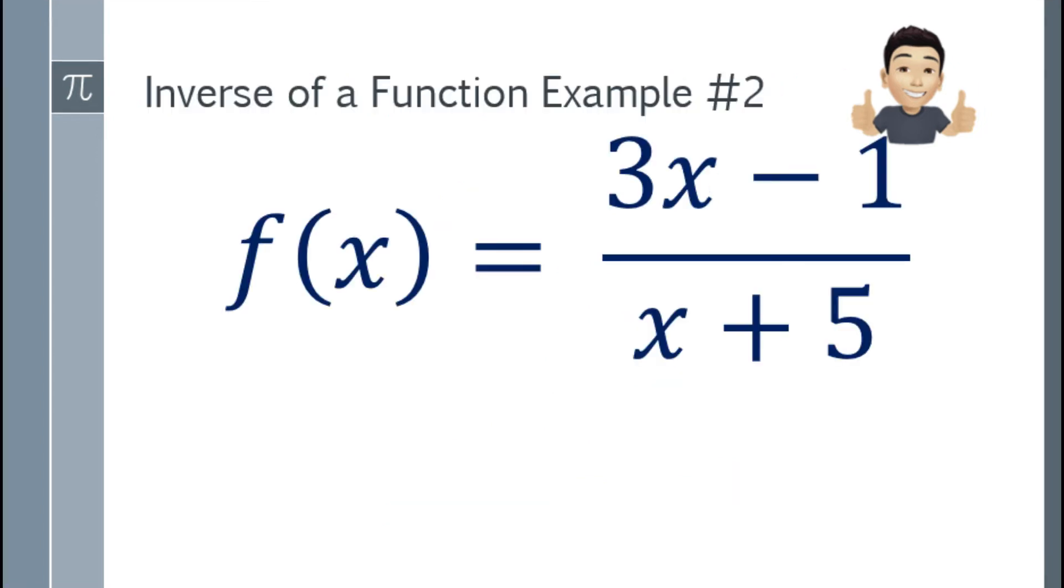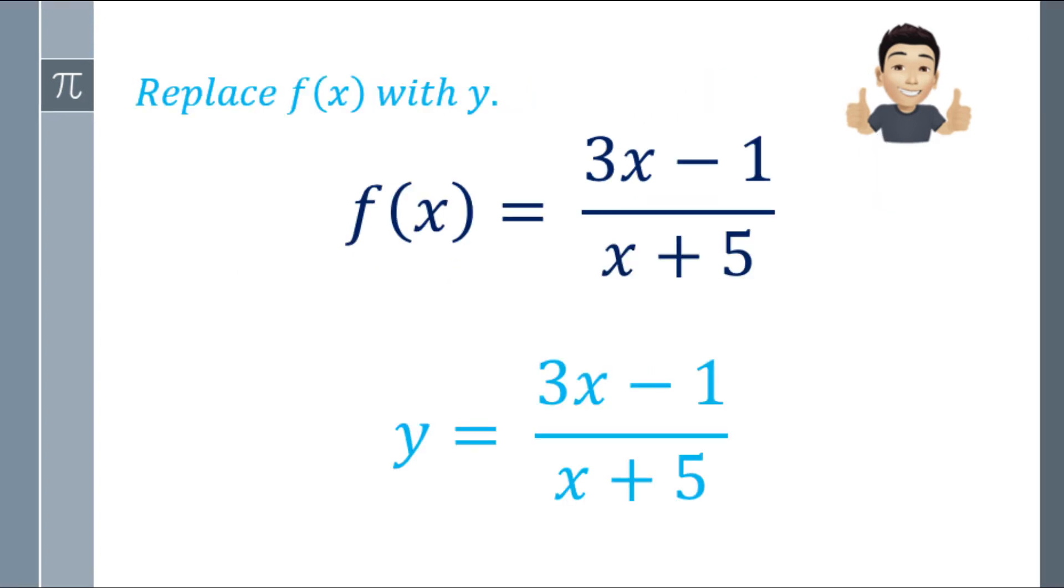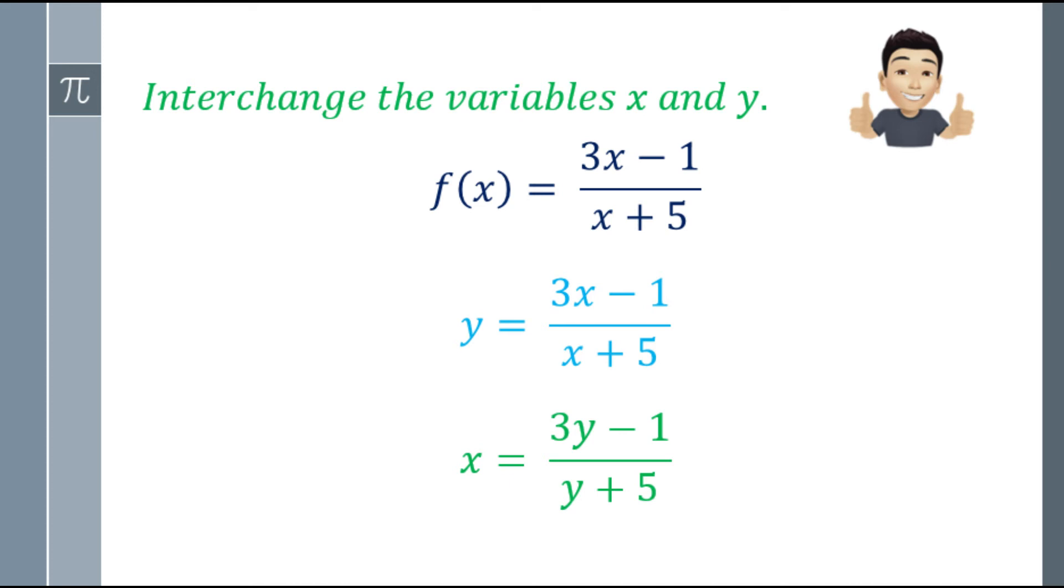Okay, let's move to a more complicated example. The function of x is equal to 3x minus 1 over x plus 5. So first step again, palitan mo lang yung function of x ng y. So that will be y is equal to 3x minus 1 over x plus 5. Next step, iswap mo lahat ng x sa y. So that will be x is equal to 3y minus 1 over y plus 5.